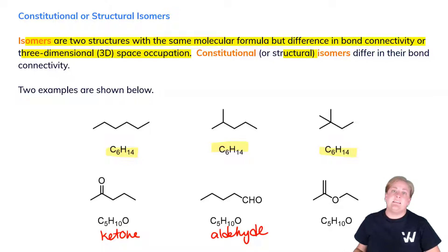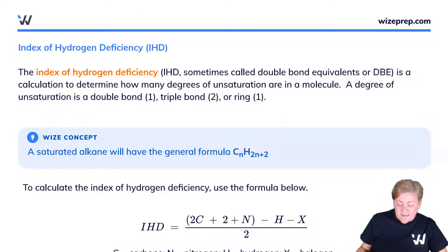Now there's one last important connection with constitutional isomers to spectroscopy called the hydrogen deficiency index. Let's take a look. So the hydrogen deficiency index or the index of hydrogen deficiency, sometimes called double bond equivalents or DBE. Unfortunately, there's about four different ways to name this.